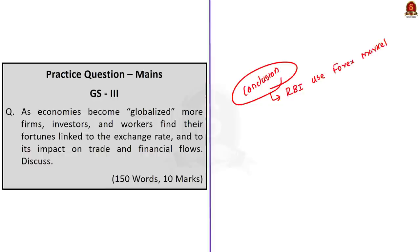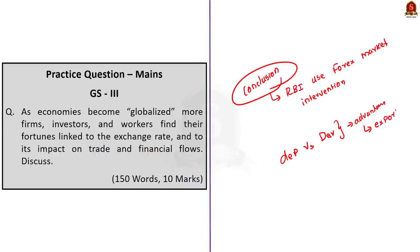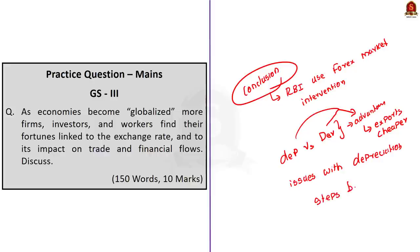That's all regarding this discussion. In summary, we first saw the difference between depreciation and devaluation, then the advantage of depreciation and devaluation — that exports become cheaper and trade deficit comes down — then the four issues associated with the current rupee depreciation, and finally the four steps taken by the RBI to arrest this depreciation. I hope this discussion was useful. Let us conclude and take up the next news article.